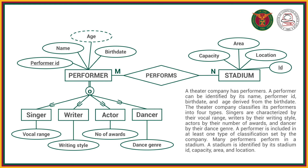The theater company classifies its performers — so that sounds like specialization — into four types. We have singers characterized by their vocal range, writers by their writing style, actors by their number of awards, and dancers by their dance genre. A performer is included in at least one type of classification set by the company, meaning at minimum one but can be classified into more than one — that will be overlapping. So a singer can be a writer, an actor, or a dancer at the same time.